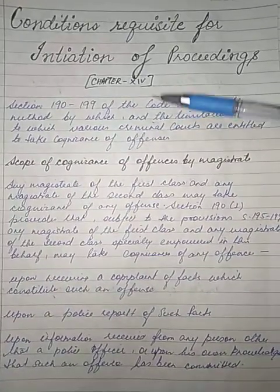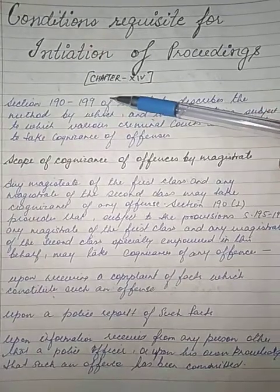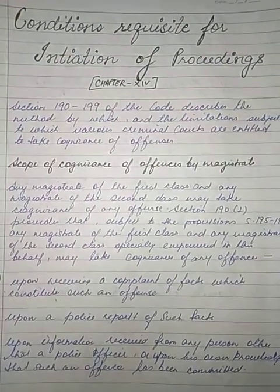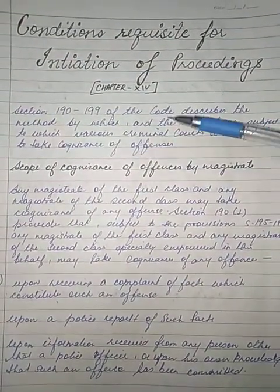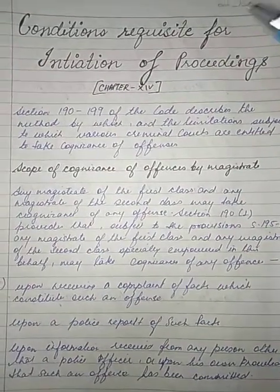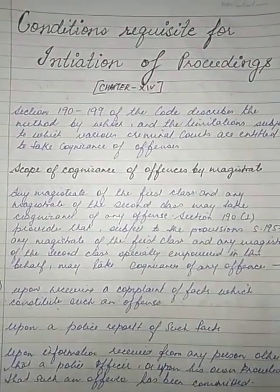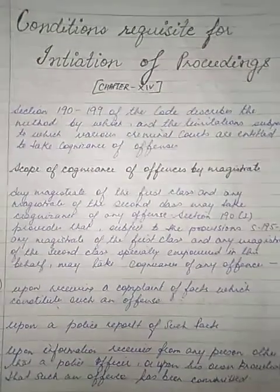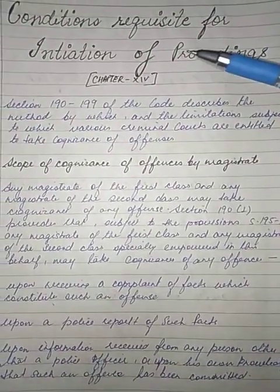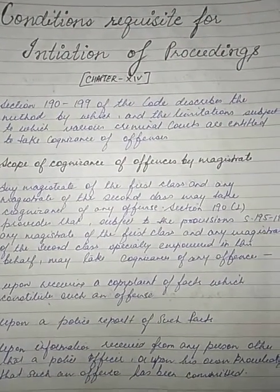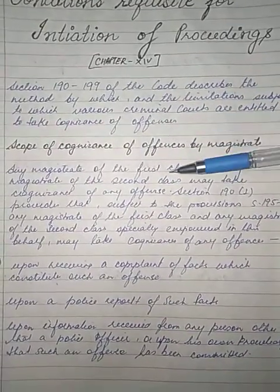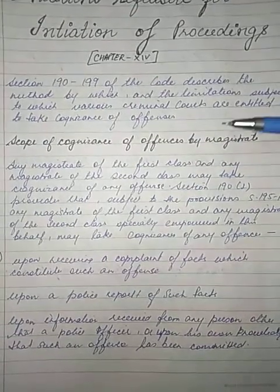Sections 190 to 199 of the Code describe the method by which, and the limitations subject to which, various criminal courts are entitled to take cognizance of offenses. These sections basically tell about how courts take cognizance of an offense and what limitations apply when criminal courts take cognizance.